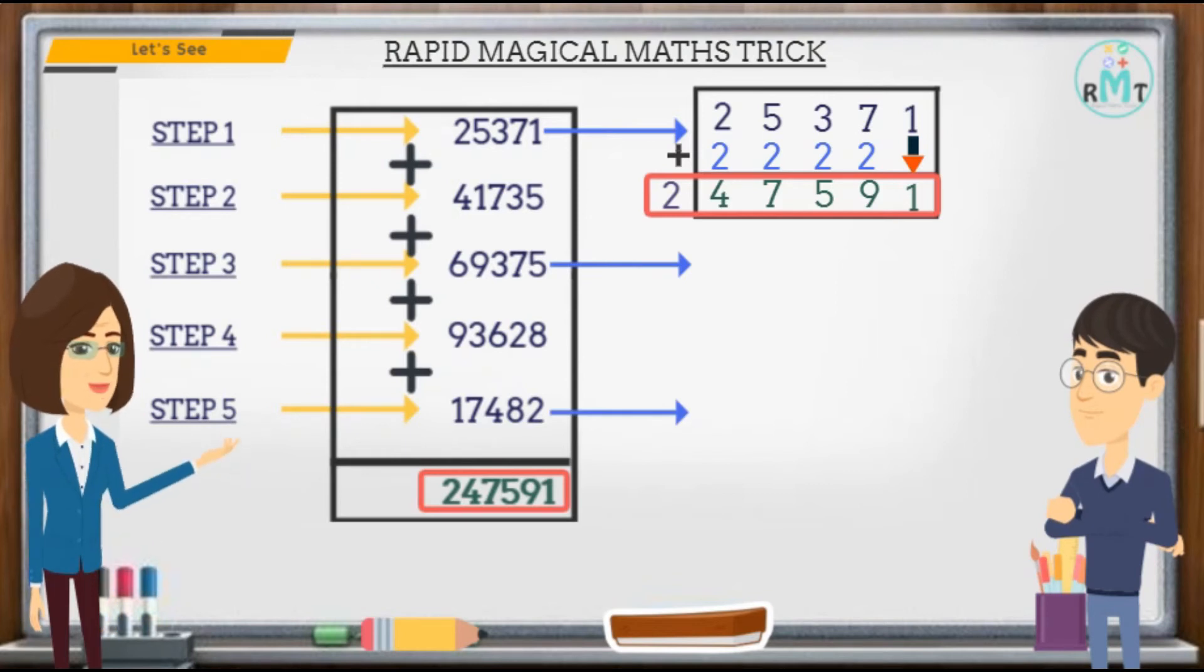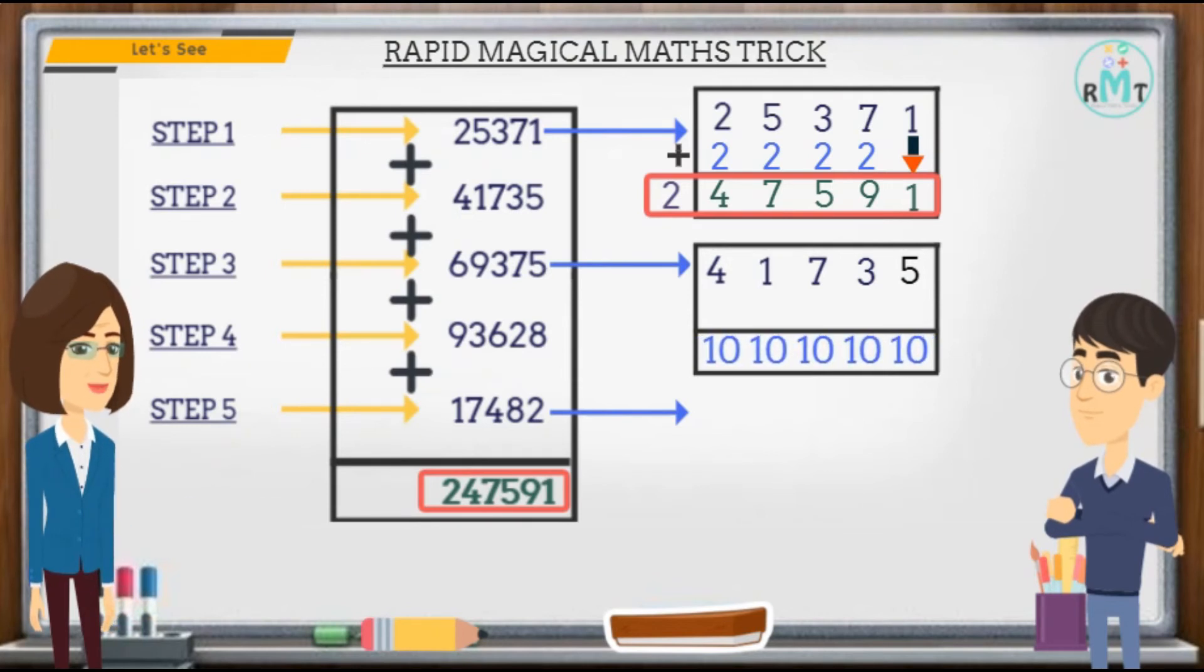In step three, look at the above digit, try to make the sum of the above digit and yours equal to ten. So the answer is 69375, that is the number you write in step three.